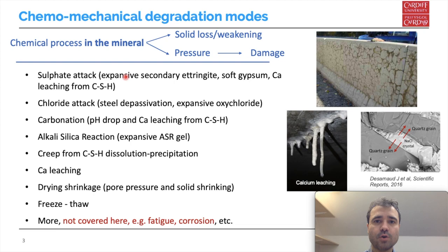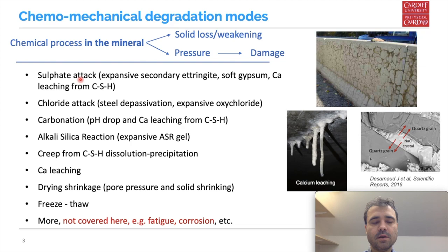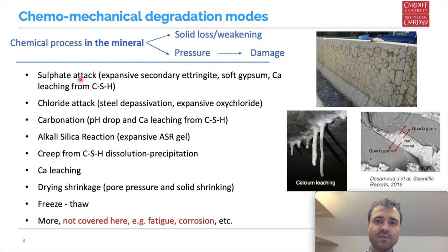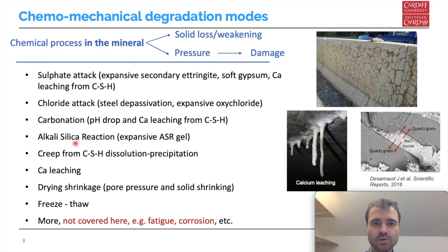In this talk I'm going to focus on chemo-mechanical processes degrading the mineral phases in concrete, excluding purely mechanical processes such as fatigue or processes involving the rebar like corrosion. As an example, in sulfate attack you have sulfate ions penetrating from the exterior into the pore structure of the concrete, diffusing into it, reacting with calcium and aluminium, producing soft phases like gypsum which directly weaken the structure, but also expansive phases like ettringite which create local pressure that may damage the material. So diffusion, reaction, expansion, and damage are common to all these various degradation modes.